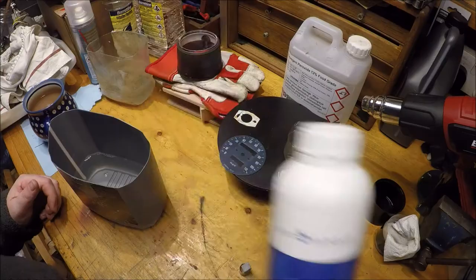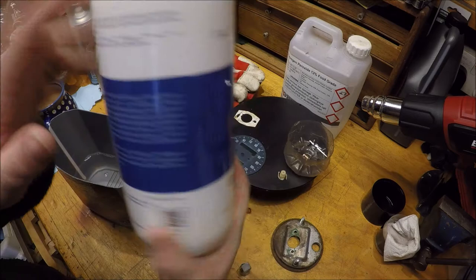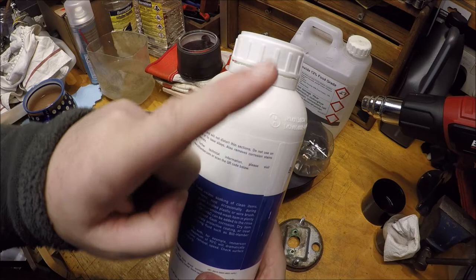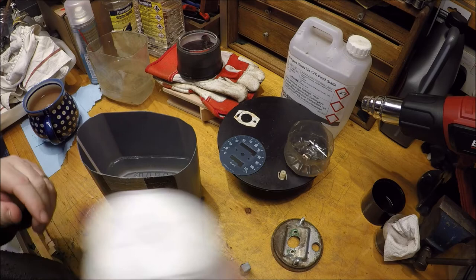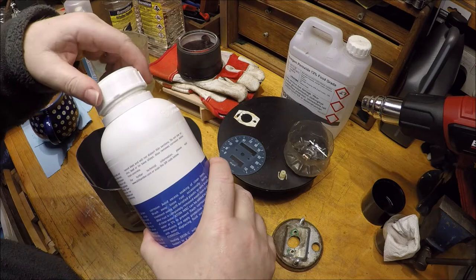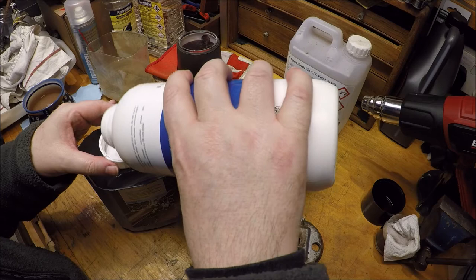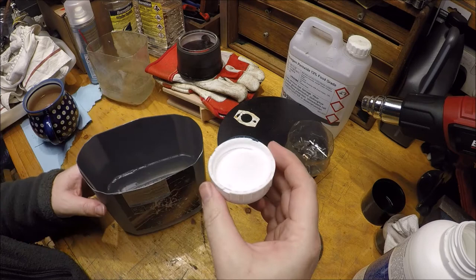I'm going to use this Bilt Hamber deoxy rust remover. I'll put a tab in here for previous videos covering this stuff. I really recommend this; I wish I'd found it a lot earlier. It's a powdered material and you just add it to your liquid. There are instructions on how much to add, but with the test we ran, I just give it a good sprinkle these days.